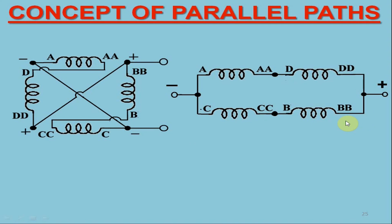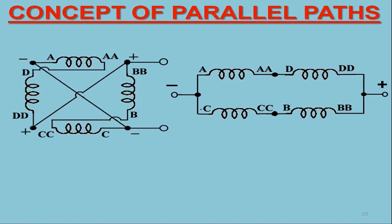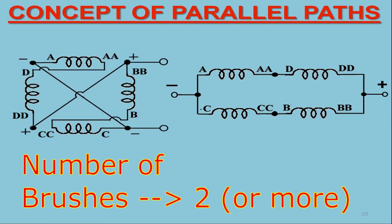Obviously, for this reason, the wave wound armatures are generally used in such DC machines having low current and high voltage ratings. It is also notable that for wave winding case, there may be two or more brush positions.